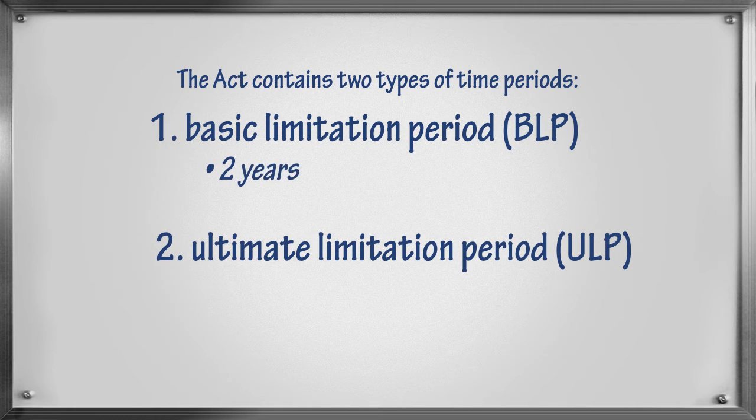The two-year Basic Limitation Period applies to all civil claims unless the Act specifies that a different limitation period or no limitation period applies. For the Basic Limitation Period, time begins to run from the date the person discovers their claim or legal problem. In order to discover a claim, a person must know, or ought to have known, that their injury, loss, or damage happened, that it was caused by another person, and that it was a significant enough legal problem to seek a remedy in court. You can find the wording of the Discovery Test in Section 8 of the Act.